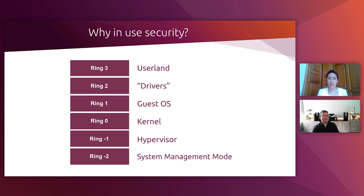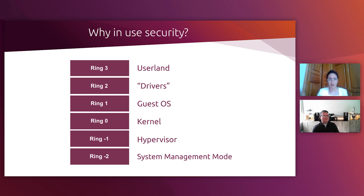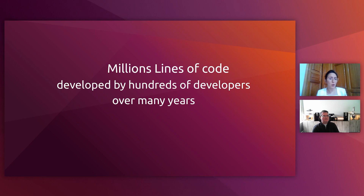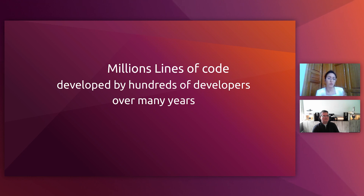If there is any vulnerability — say in the hypervisor code, and this has happened before, this is not hypothetical — if there is a vulnerability which breaks down the isolation guarantees of inter-VM communication, then suddenly your workload can be compromised by another VM living on the same infrastructure. This privileged system-level software is not hundreds or even thousands of lines of code — these are millions of lines of code, developed by hundreds of developers over many decades.